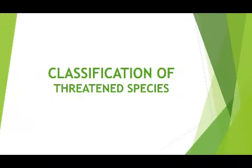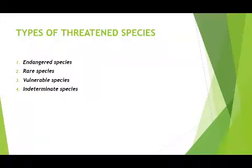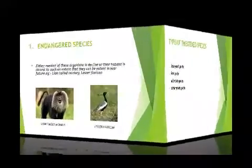Classification of threatened species: threatened species means such species which will not be visible in the near future. Threatened species are classified under four groups or categories: first, endangered species; second, rare species; third, vulnerable species; and fourth, intermediate species.